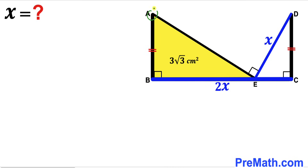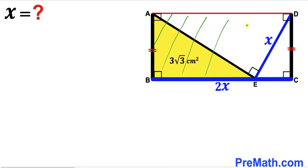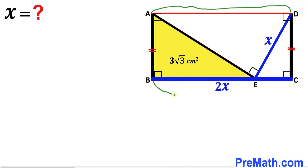The first step is to connect vertex A with vertex D. As a result, we get right triangle AED, where this angle is 90 degrees, and likewise this angle is 90 degrees as well since those side lengths are equal. In other words, we are dealing with rectangle ABCD. Therefore, side AD equals side BC, and if BC is 2X then AD is 2X as well.